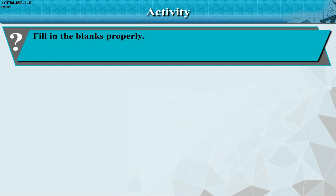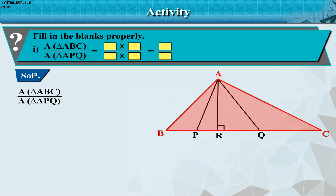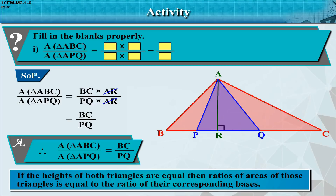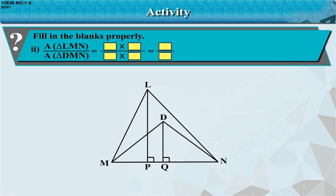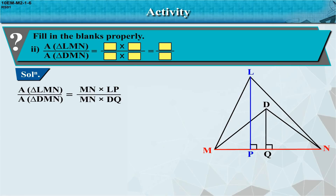Activity — fill in the blanks properly. Problem 1: Area of triangle ABC / area of triangle APQ. Solution: Area of triangle ABC / area of triangle APQ = (PC × AR) / (PQ × AR) = PC / PQ. If the heights of both triangles are equal, then the ratio of their areas equals the ratio of their corresponding bases. Problem 2: Area of triangle LMN / area of triangle DMN. Solution: = (MN × LP) / (MN × DQ) = LP / DQ. The ratio of areas of two triangles with equal bases equals the ratio of their corresponding heights.